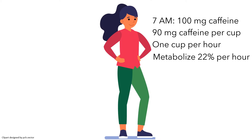We'll write A(t) to represent the amount of caffeine in Aleema's body in milligrams. Let's come up with a differential equation for A', the rate at which the amount of caffeine in Aleema's body is changing.